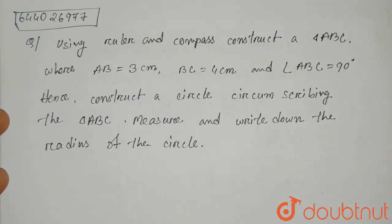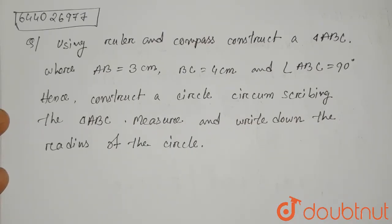In the case of a right angle triangle, whenever we want to draw the circumcircle of the triangle, the center of the circumcircle will be the midpoint of the hypotenuse. So first we'll draw the triangle, then we'll find the hypotenuse and the midpoint of the hypotenuse, and taking that as the center we'll draw the circle.